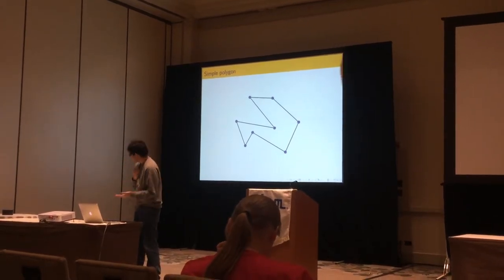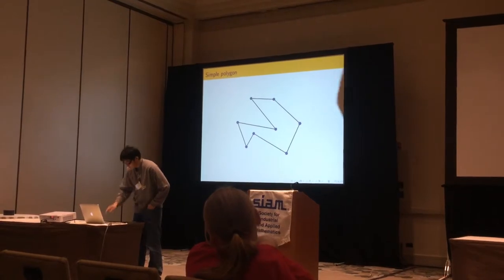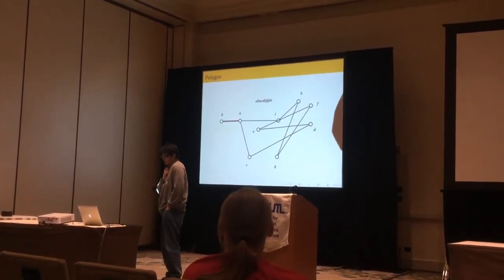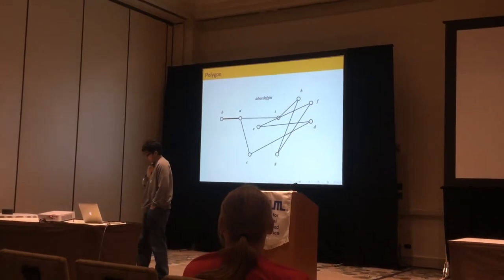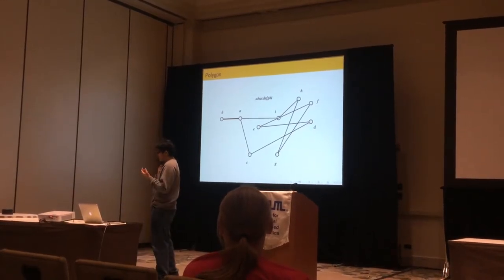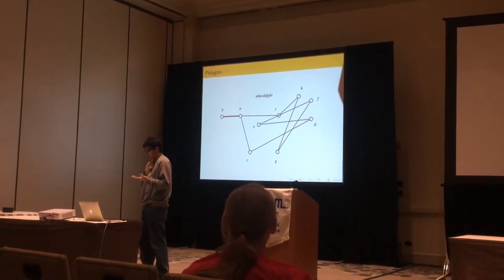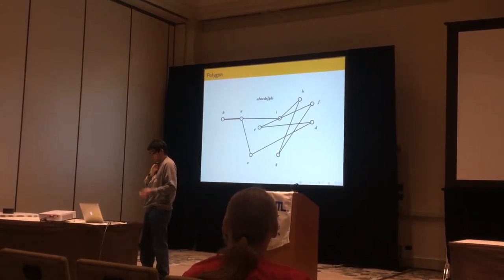This is the common polygon when they say the word polygon. However, the polygon can be defined as a cyclic sequence of points on the plane connected by line segments. In this case, the polygon can look really strange.